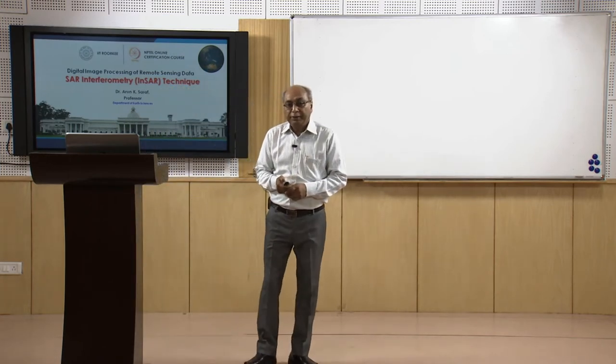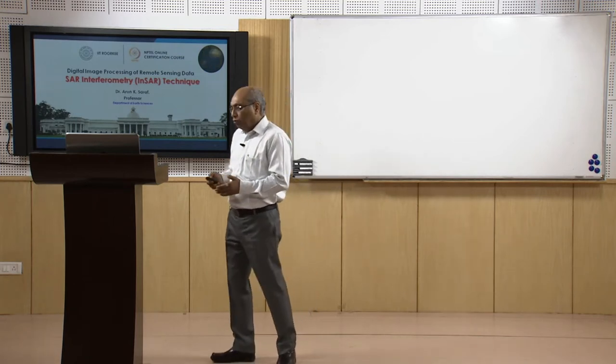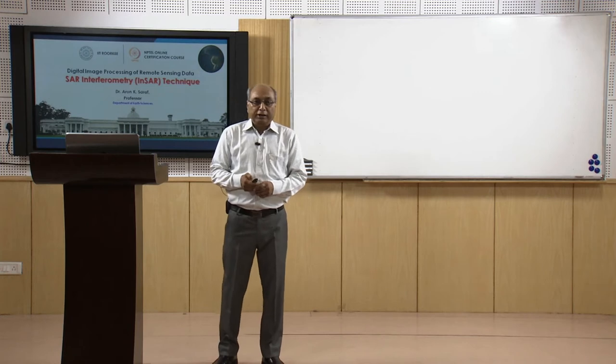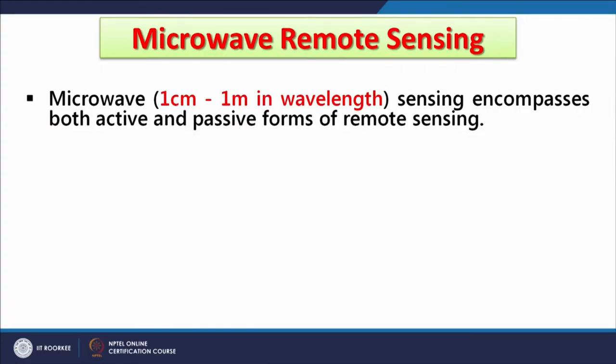SAR Interferometry stands for Synthetic Aperture Radar Interferometry. As you know, there are two major types of remote sensing: active remote sensing and passive remote sensing. Passive remote sensing includes optical and thermal infrared, whereas microwave remote sensing is active remote sensing — also called radar remote sensing. When we say microwave, we are talking about wavelengths of 1 centimeter to 1 meter, which is very large compared to visible, infrared, or thermal infrared.